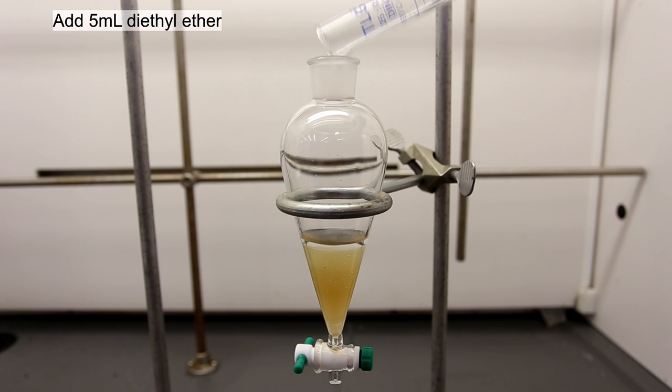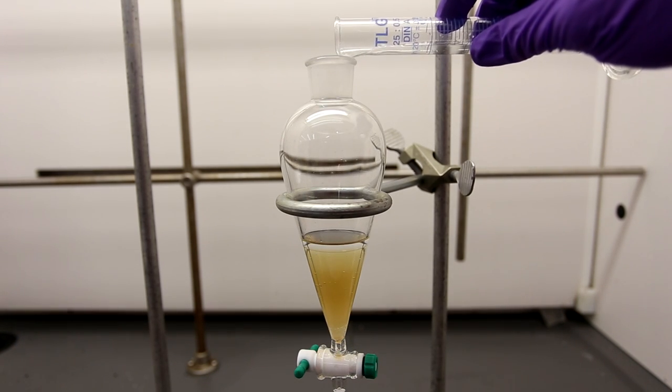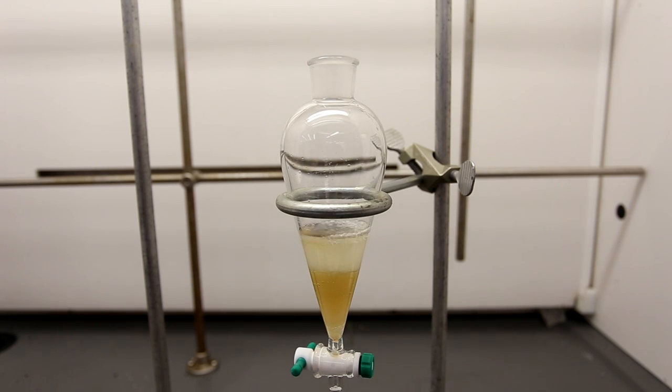Next, 5 milliliters of ether was added. The solution was acidified using 2 molar H2SO4. We are acidifying the solution to regenerate the butyric acid from its salt form. The butyric acid is less polar than its salt form and can be extracted from the water using ether.